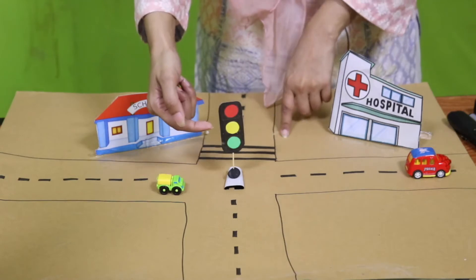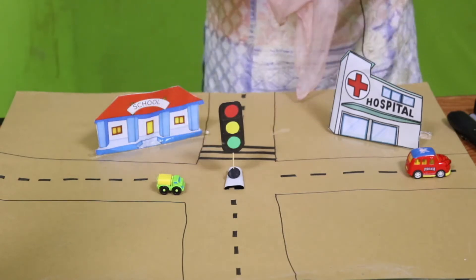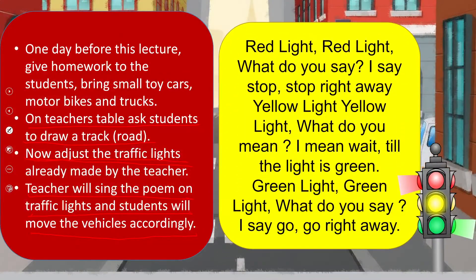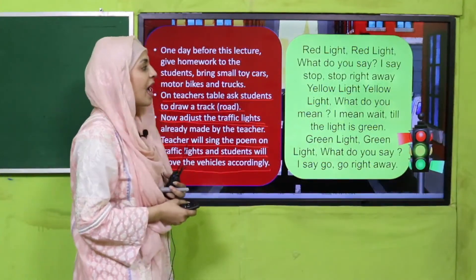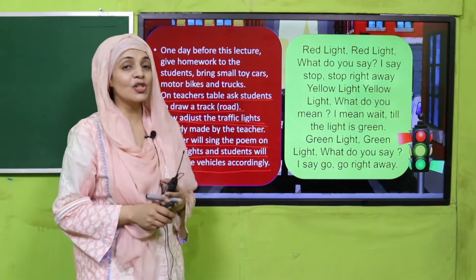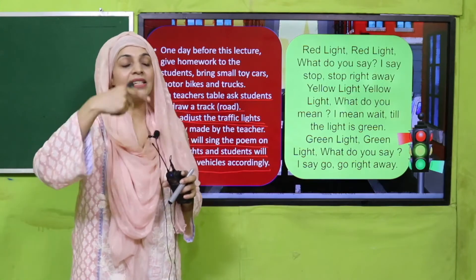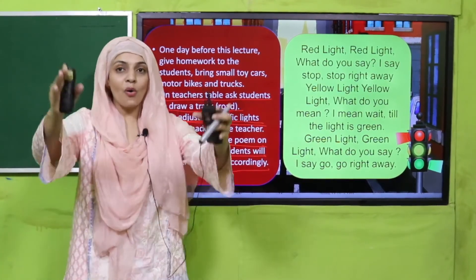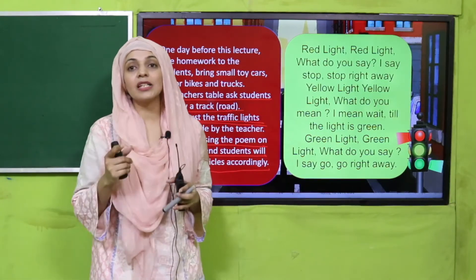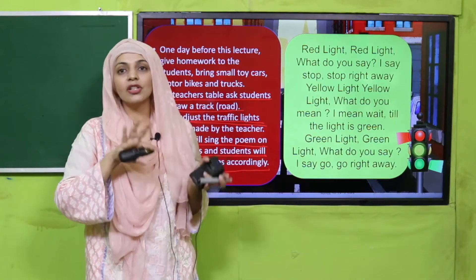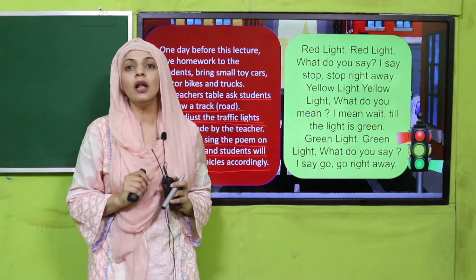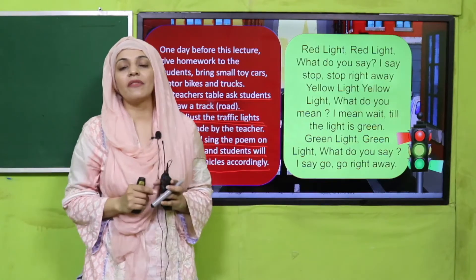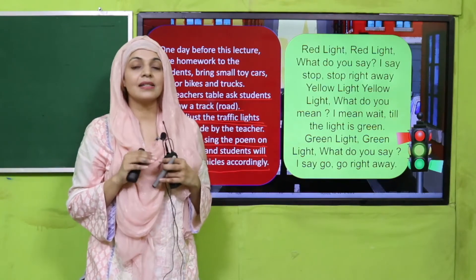Red means stop, yellow means ready, and green means go. On this topic, let's recite a poem: 'Red light, red light, what do you say? I say stop, stop, stop right away. Yellow light, yellow light, what do you say? I say wait till the light is green. Green light, green light, what do you say? I say go, go right away.' Children will recite this poem with actions in class.